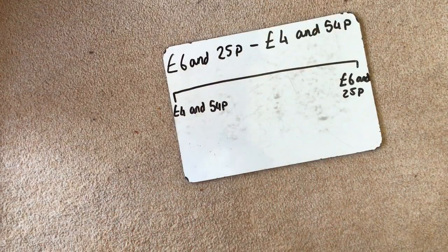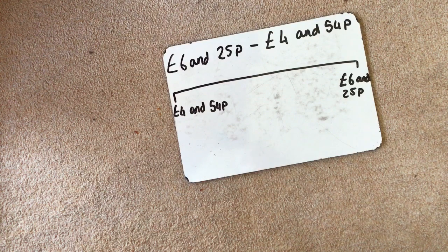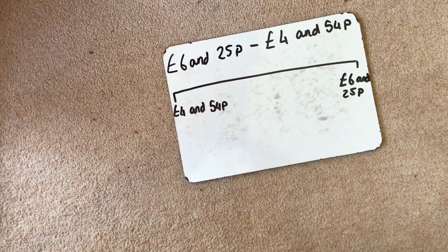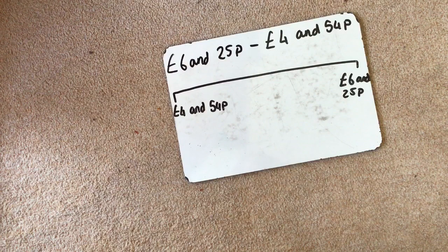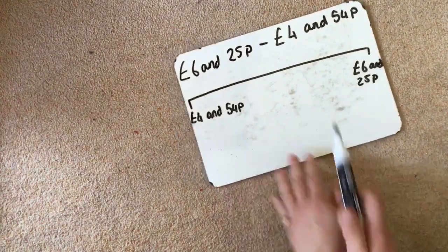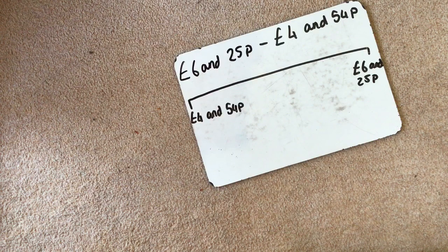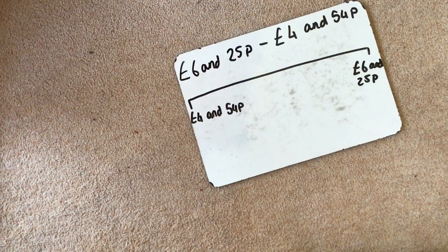Okay, so one of the methods you're going to need to use today is the number line method. So I'm just going to go over how to do that again with you just so that you know what to do. Right, so we've got a calculation here which is £6.25 take away £4.54. So I'm going to show you how we can use the number line method to do this.